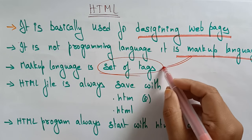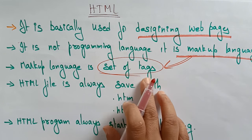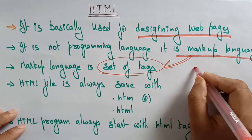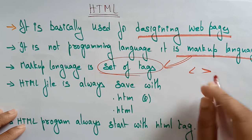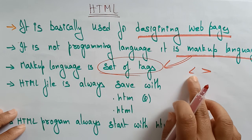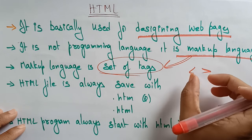A markup language consists of a set of tags, whereas in a programming language you write programming code. In a markup language, you write everything in the form of tags. Tags mean open and closed brackets — statements have to be written inside these tags.